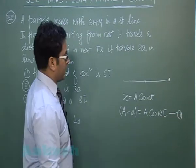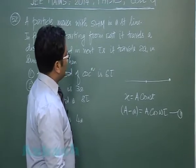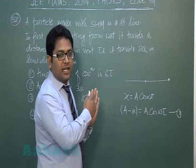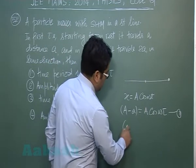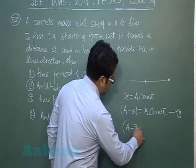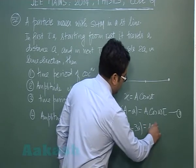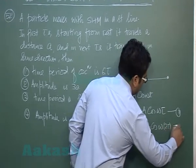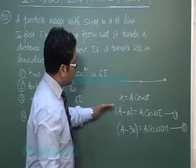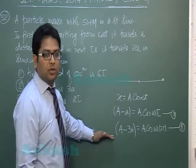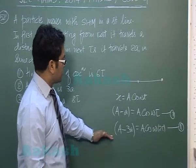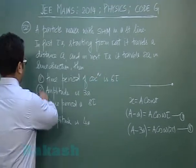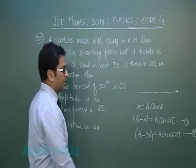In the next τ seconds it travels 2a, so altogether it has traveled 3a. That would be A - 3a = A cos(2ωτ). This is equation two. We can solve these two equations to find ω and amplitude. On calculation, you get the time period of oscillation is 6τ.